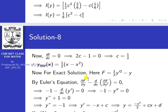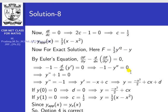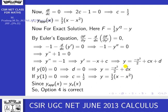For the exact solution, we use the Euler equation. With F = ½ y-dash² − y: ∂F/∂y = −1 and d/dx(∂F/∂y-dash) = d/dx(y-dash) = y-double-dash. So the Euler equation gives −1 − y'' = 0, i.e., y'' = −1. Integrating: y' = −x + c₁ and y = −x²/2 + c₁x + c₂.